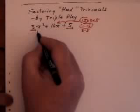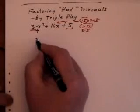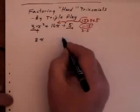Now, with triple play, you take your first term, 3x squared, and you write it down 3 times.